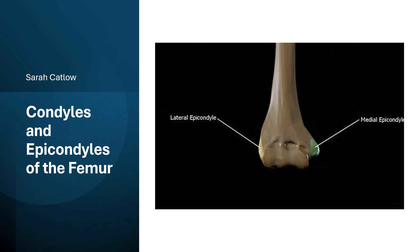We're going to look at the condyles and epicondyles of the femur. The femur is the longest and strongest bone in the body, and its distal end is really important for forming the knee joint. Two important features at the distal end of the femur are the condyles and the epicondyles, which play essential roles in knee movement and stability.